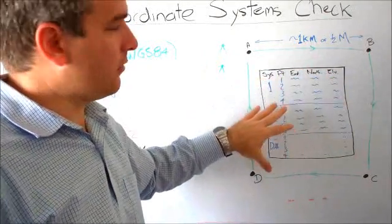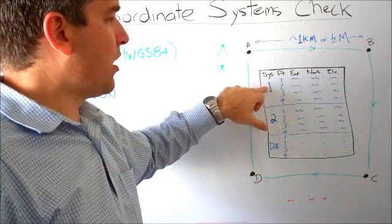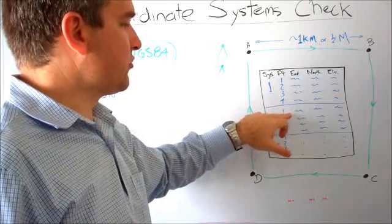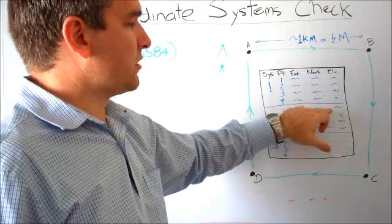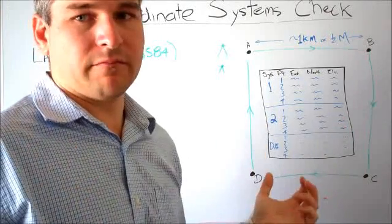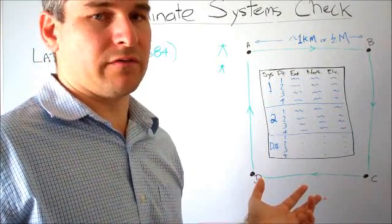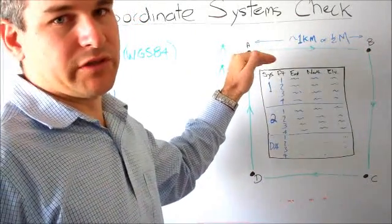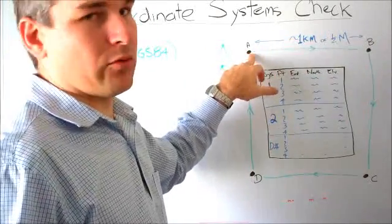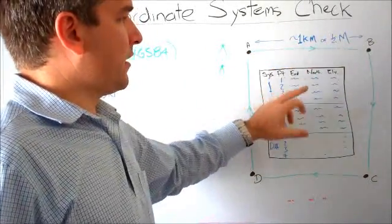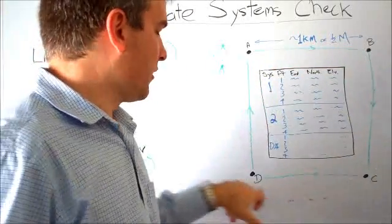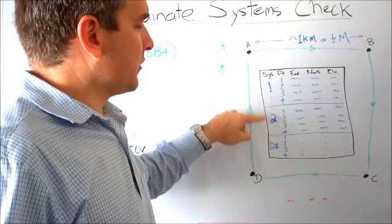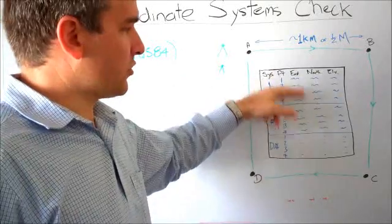Here's an example of a piece of paper you might write this down on. System one, point one, we've got that eastings, northings, and elevation. Then for system two at the same point we've got eastings, northings, and elevation. Now they might be thousands of meters off or even hundreds of thousands of meters away from each other, that's not critical at this point. We're trying to get the relative difference between the two systems as we move away from one point. So write that down at each point, drive around, record, and you end up with this table with these coordinates.